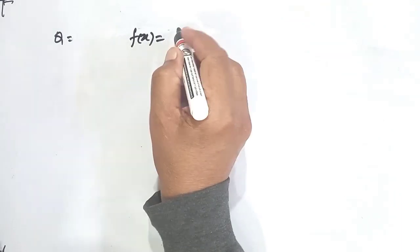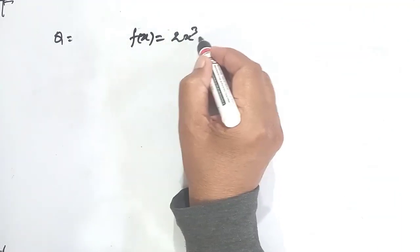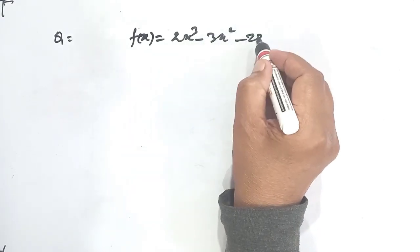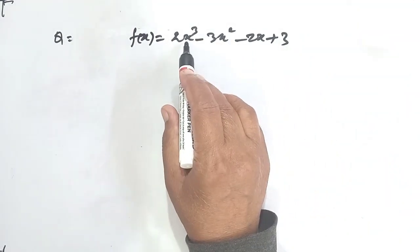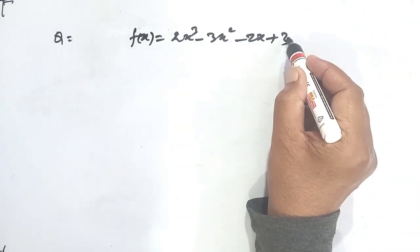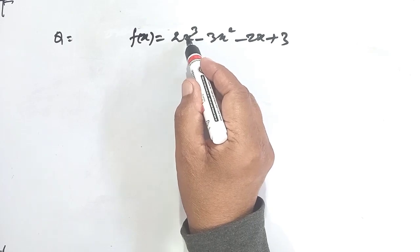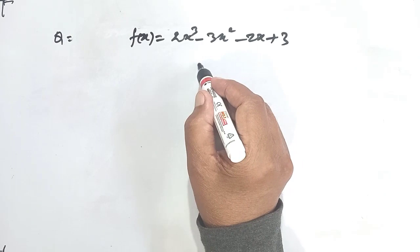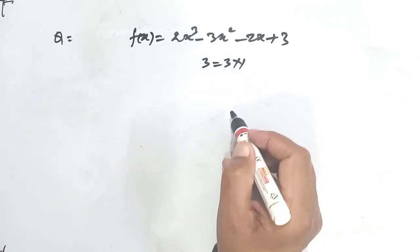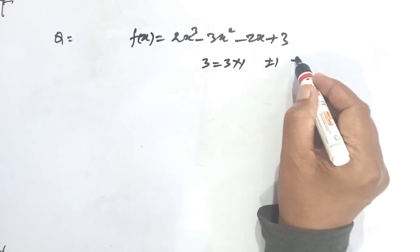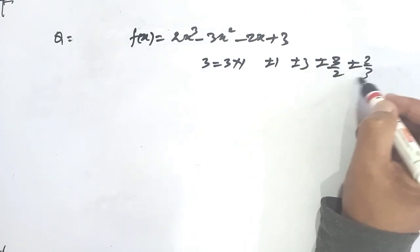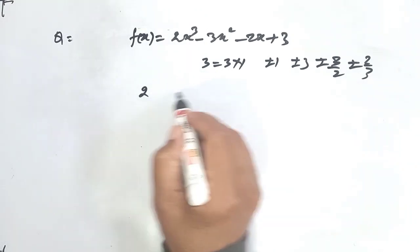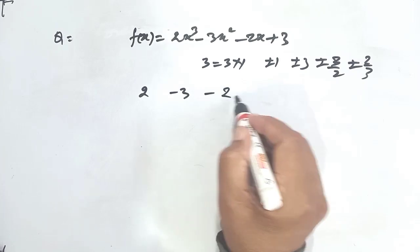Another question: suppose f(x) = 2x³ - 3x² - 2x + 3. This is a polynomial of degree 3 in decreasing order. The constant term is 3 and the leading coefficient is 2. Therefore, all possible rational factors may include ±1, ±3, ±3/2, or ±2/3, all of which can be tried. We write down the coefficients: 2, -3, -2, and 3.